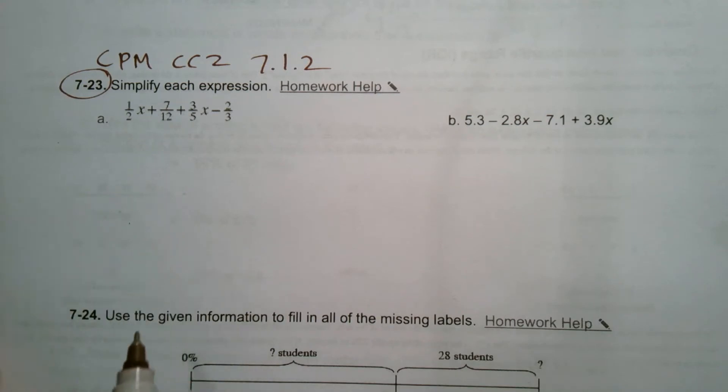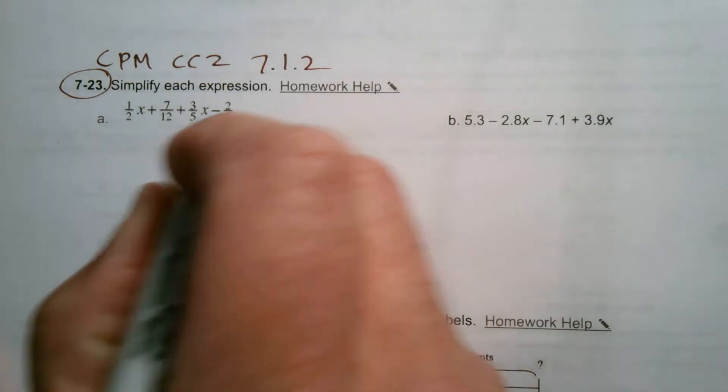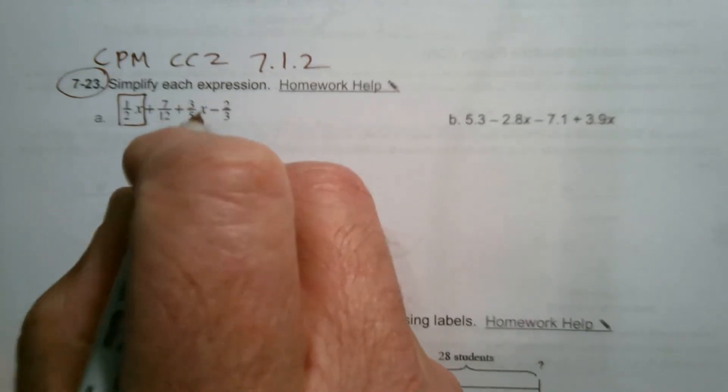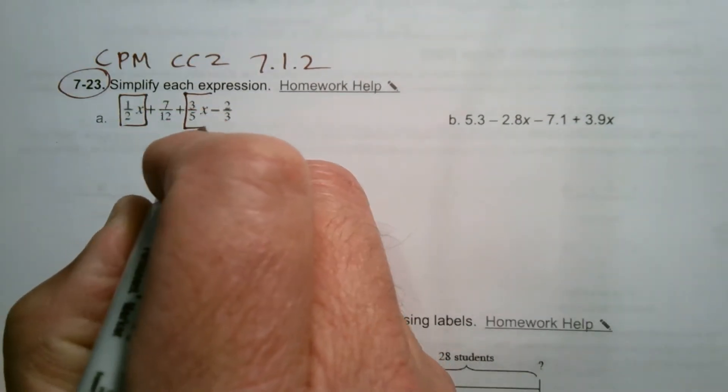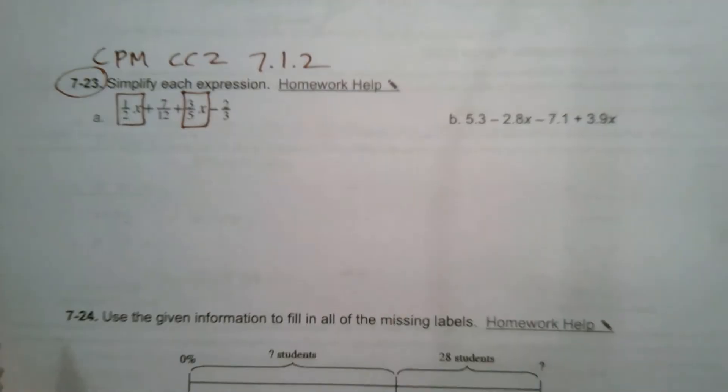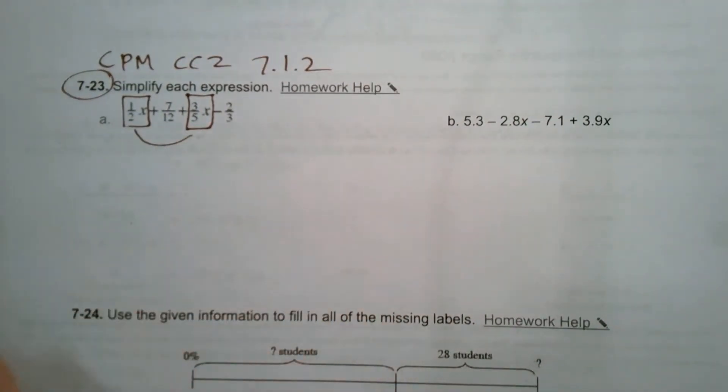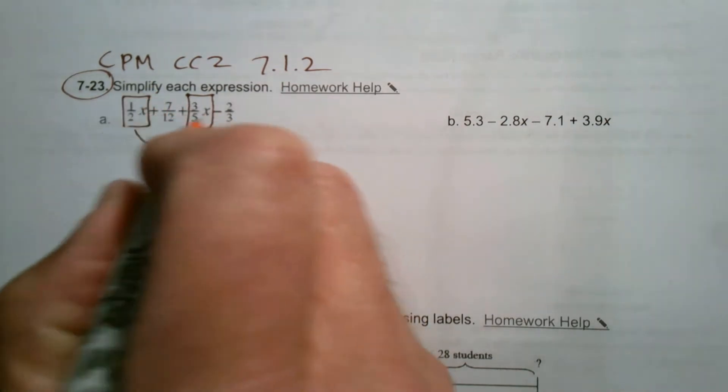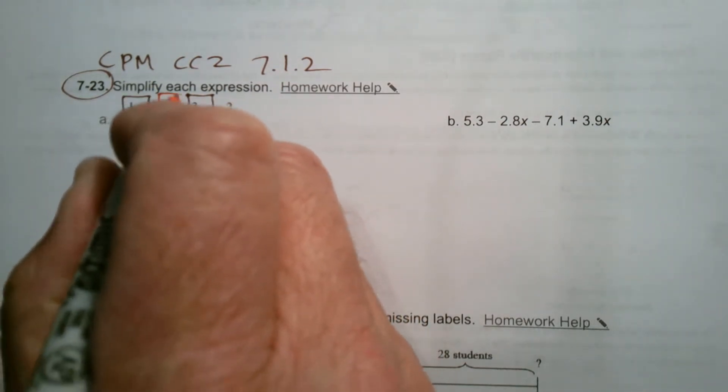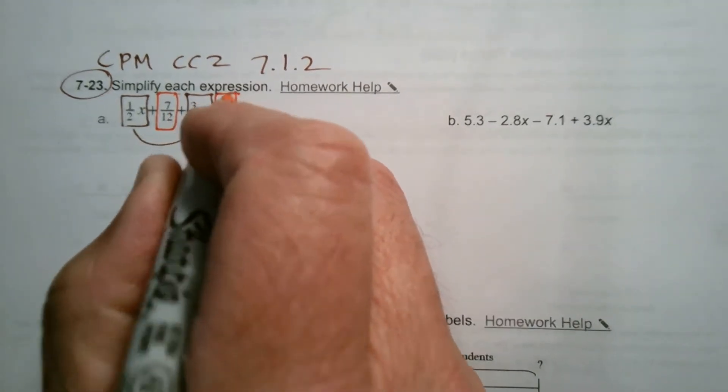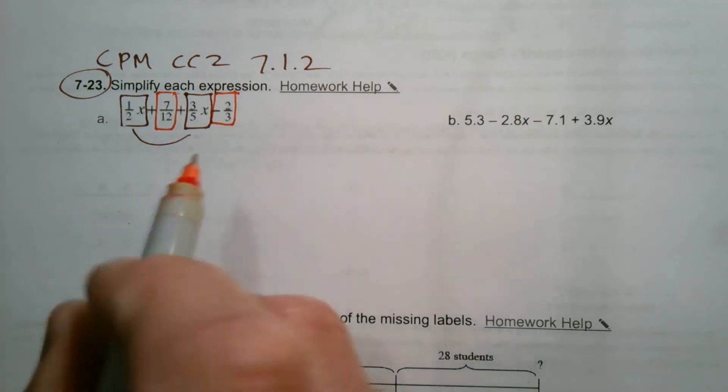First of all, I need to identify my like terms. My like terms in this case would be 1.5x and the other one is a positive 3.5x. Those are two like terms, so I'm going to want to combine those, I'm going to be adding those. Those are my variable terms, and then there's my constants. It's a positive seven twelfths, and then with that minus in front makes it a negative or minus two thirds.